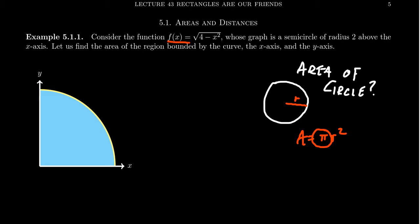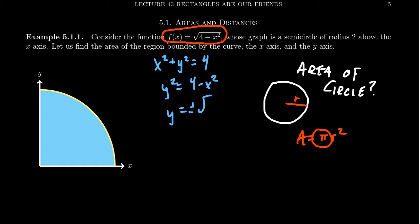Take the function f(x) = √(4 − x²). The circle centered at the origin with radius 2 has equation x² + y² = 4. Solving for y gives y = ±√(4 − x²). Choosing the positive branch gives the upper semicircle, and restricting the domain to 0 to 2 gives a quarter circle.